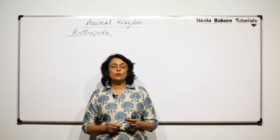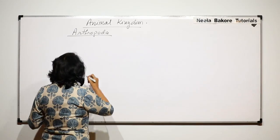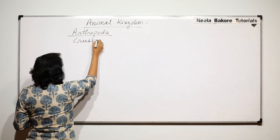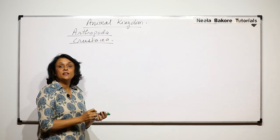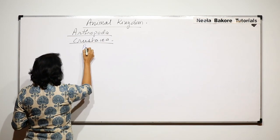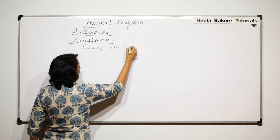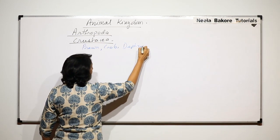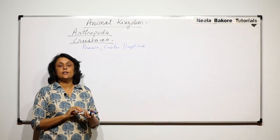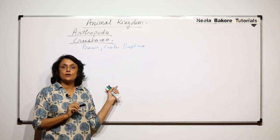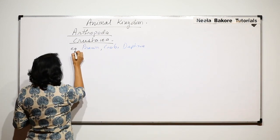In this video we will talk about another class of Phylum Arthropoda, and the class is Crustacea. The examples that we normally discuss under this class are Prawn, Crab, and Daphnia. We will be talking about these in detail, but before that let us discuss the basic structure of this particular class, Crustacea.